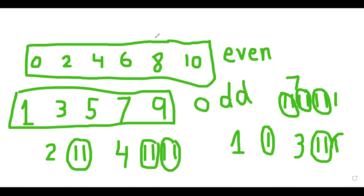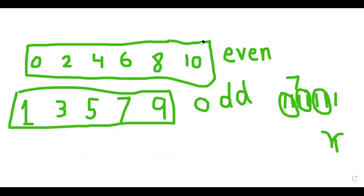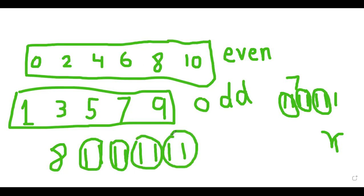Let's take another number: eight. I draw eight lines: one, two, three, four, five, six, seven, eight. Now make them into groups of two — one, two, three, four groups. This is an even number; eight is even because there is no line remaining. Okay, let's move back to the exercise.